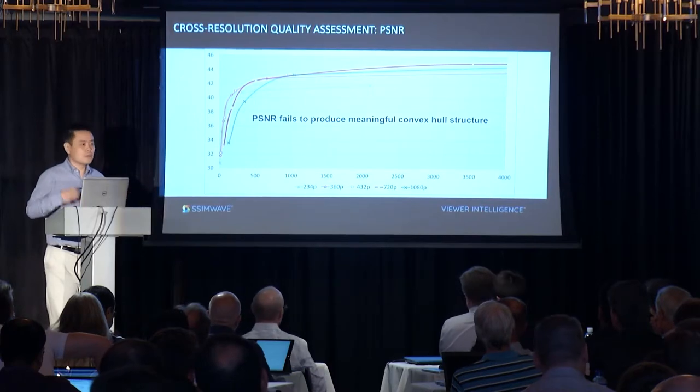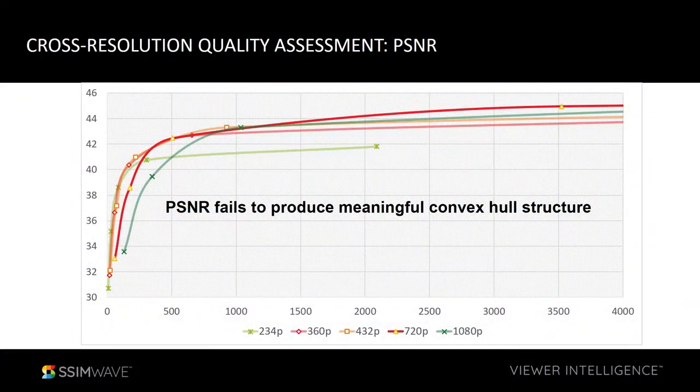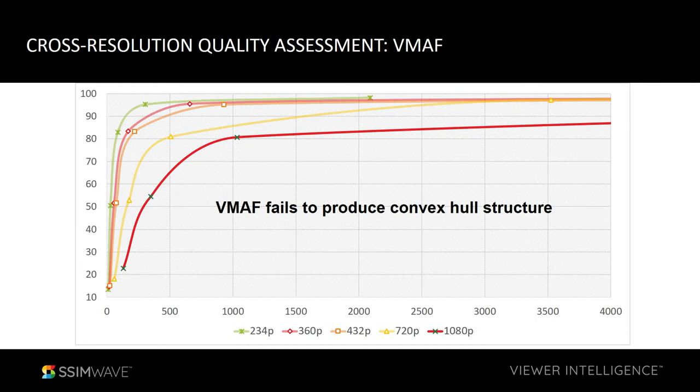Netflix put this convex hull as a conjecture — if you have a good quality metric, this is what you should get. But in reality, their metric like VMAF doesn't give them that. We did real testing: with PSNR, if you have the same content with different resolutions, it gives a pretty much mixed structure — it doesn't give you the convex hull. We also tried VMAF, and for this particular content, VMAF says that if you want the highest quality of around 90, you should use 234p resolution throughout — which doesn't make sense at all.